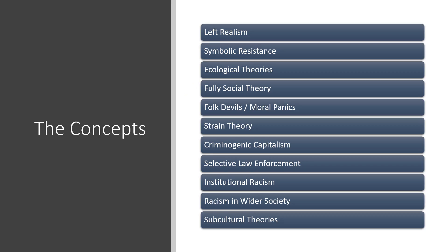Some of the concepts we could potentially talk about here include: left realism, symbolic resistance, ecological theories — particularly broken windows or the Chicago School ecological theories, even though they may seem slightly outdated — the fully social theory, folk devils and moral panic, strain theory, criminogenic capitalism, selective law enforcement, institutional racism, racism in wider society, and subcultural theories. You can apply any of those to the experience of ethnic minorities and link it into their offending and criminalisation.